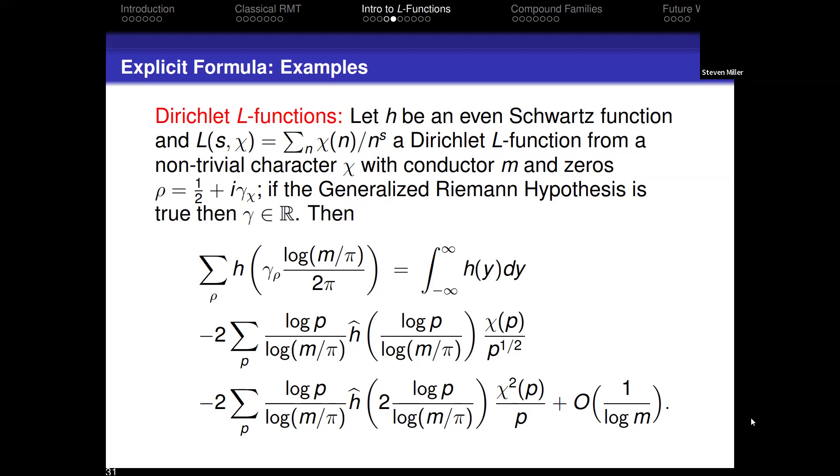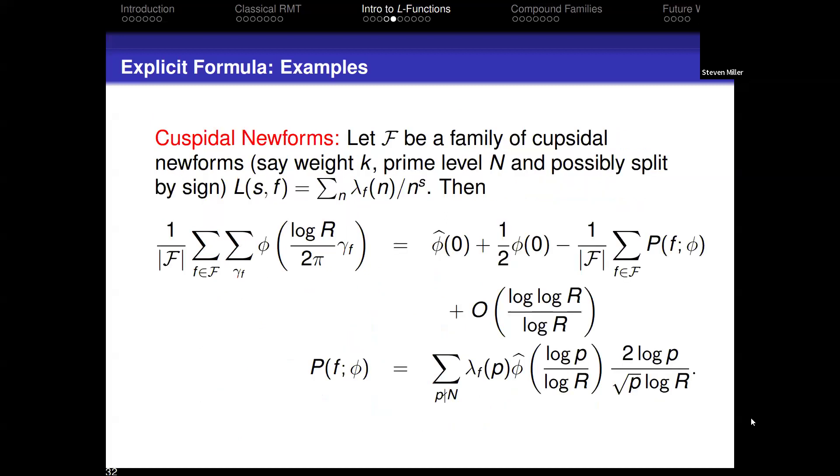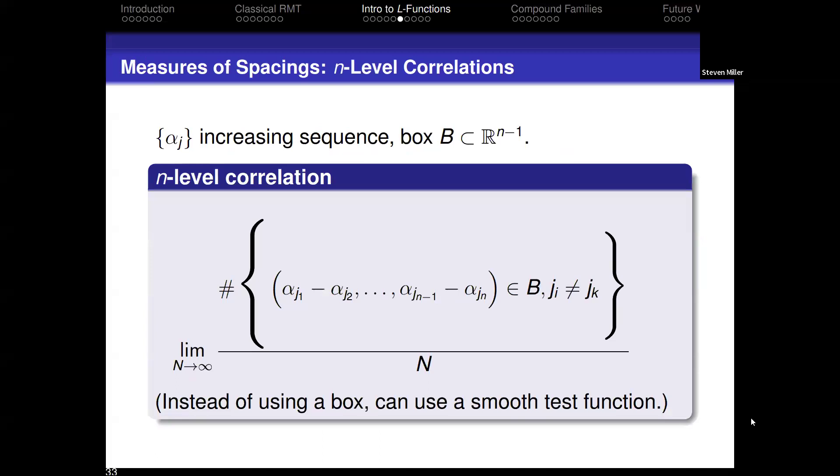To understand these prime sums is very difficult. This is why number theory is not as well advanced as random matrix theory because we can't actually do all these calculations. One of the things you notice is that the denominator, the power of p, is growing. As long as these coefficients are not too large, once we get to the cubes of the primes, the fourth powers of the primes, they give a negligible contribution. We really only have to look at the first and the second powers. This is what you would get for Dirichlet L-functions. If you look at cusp-form new forms, you get similar formulas. Whatever L-function I look at, I can get something like this. There's a lot of different statistics that you can look at. I'm not going to go through all of them now. They're in the slides.